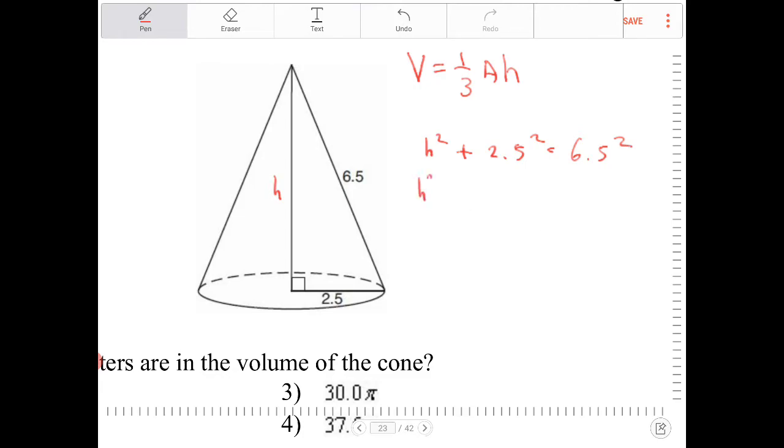So I can say h squared is equal to 6.5 squared minus 2.5 squared, or h is equal to the square root of 6.5 squared minus 2.5 squared. So let's find out what that is. Let's punch that into the calculator.